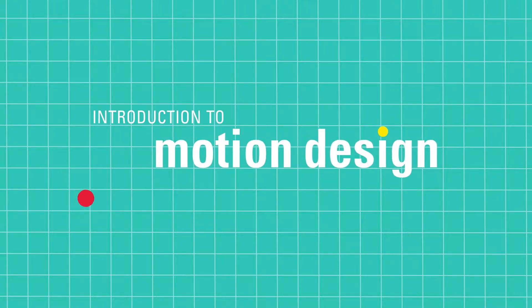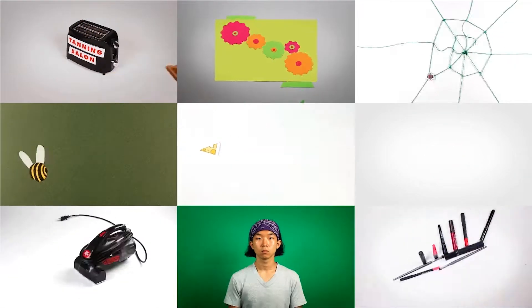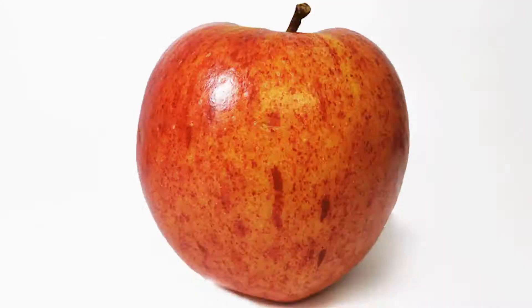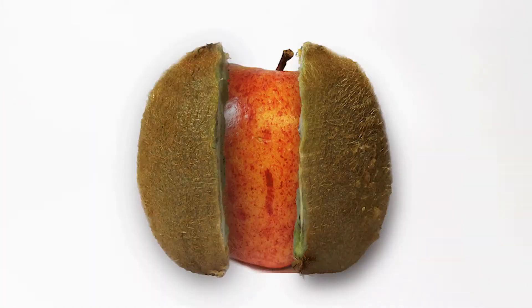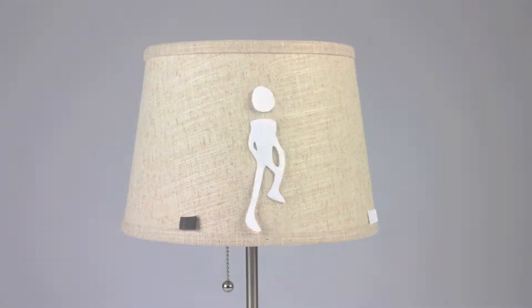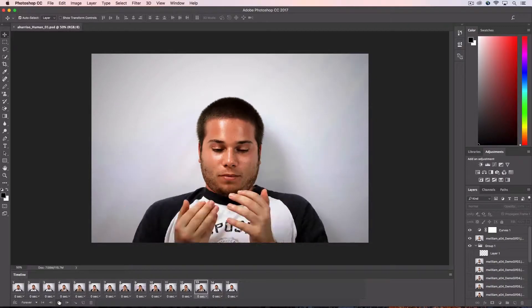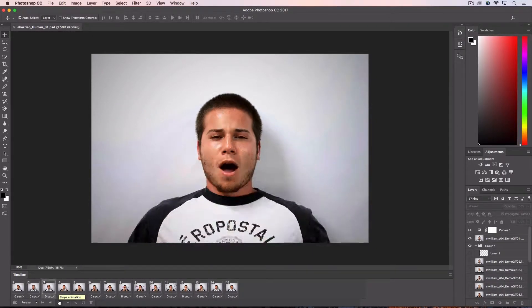Let's take a closer look at the exciting courses and projects you'll work on. In the animated GIF course, you'll utilize stop motion photography and digital imaging to create looping GIF animations. The GIF project will focus on basic composition and communication through simple motion.